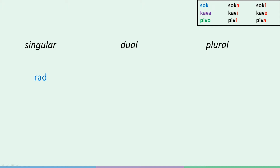For two men, or a man and a woman, it's rada. For three men, or a mixed group of people, it's radi. One woman: rada. Two women: radi. Three women: rade. One of something neuter: rado. The neuter ones are very rare, because it's people that are able to like something or someone, and people are male or female. But still, two of something neuter technically is radi, and three of something neuter is technically rada.